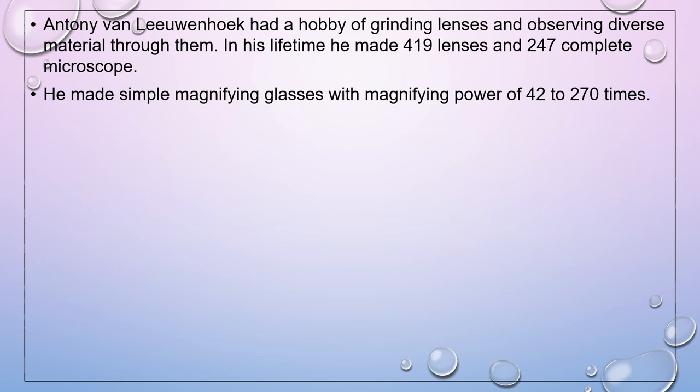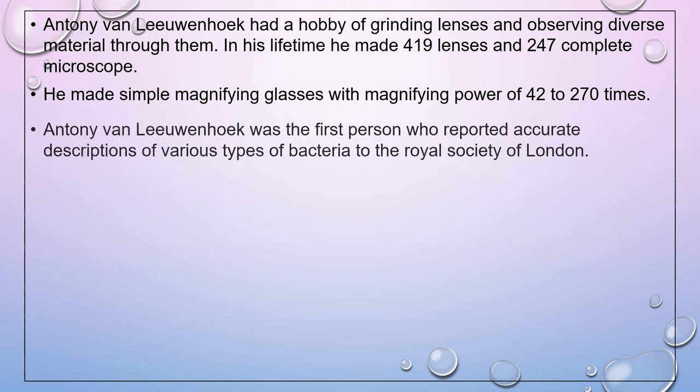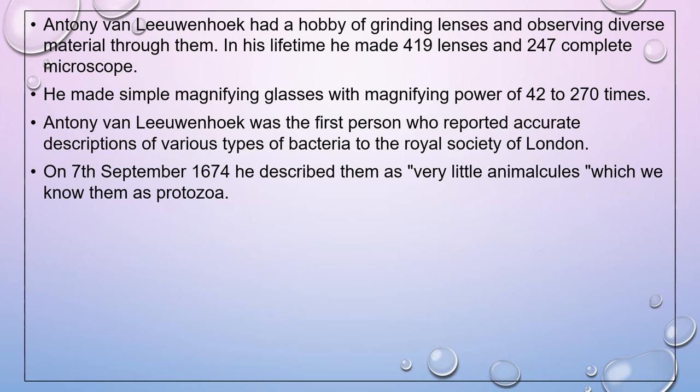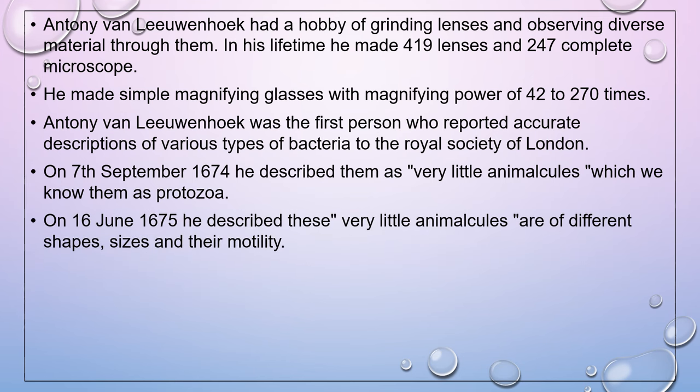Antony Van Leeuwenhoek was the first person who reported accurate descriptions of various types of bacteria to the Royal Society of London. On 7th September 1674, he described them as very little animalcules, which we now know as protozoa.